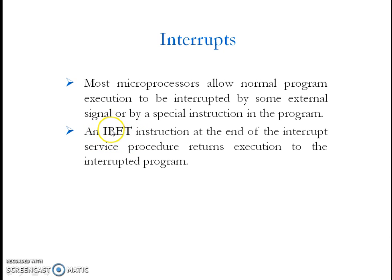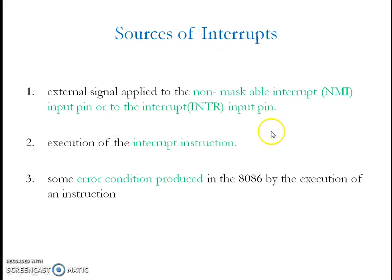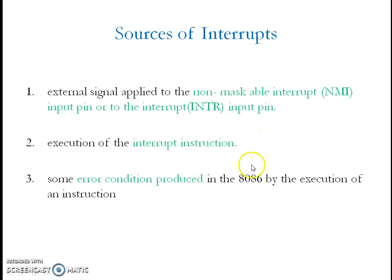There are 3 different sources of interrupts in the 8086 microprocessor: first, an external signal applied to the interrupt pins of the 8086, like the NMI pin and INTR pin; second, execution of the INT instruction in your program; and third, if you are executing a program and an error condition occurs in that program, it is going to produce an interrupt. These are the 3 sources of interrupts in the 8086 microprocessor.